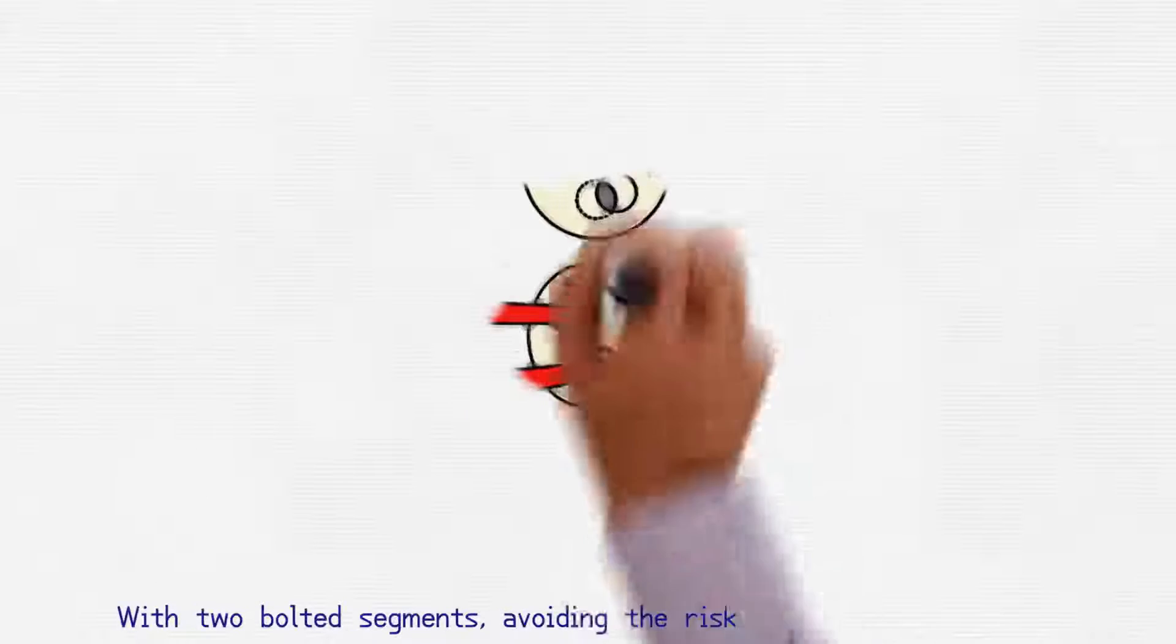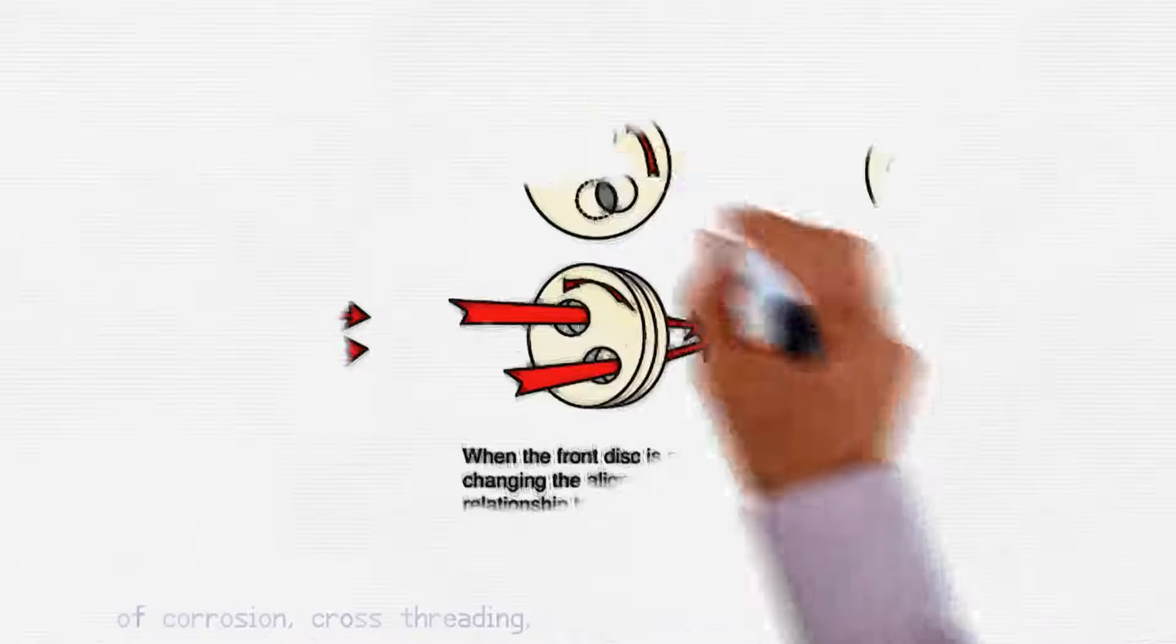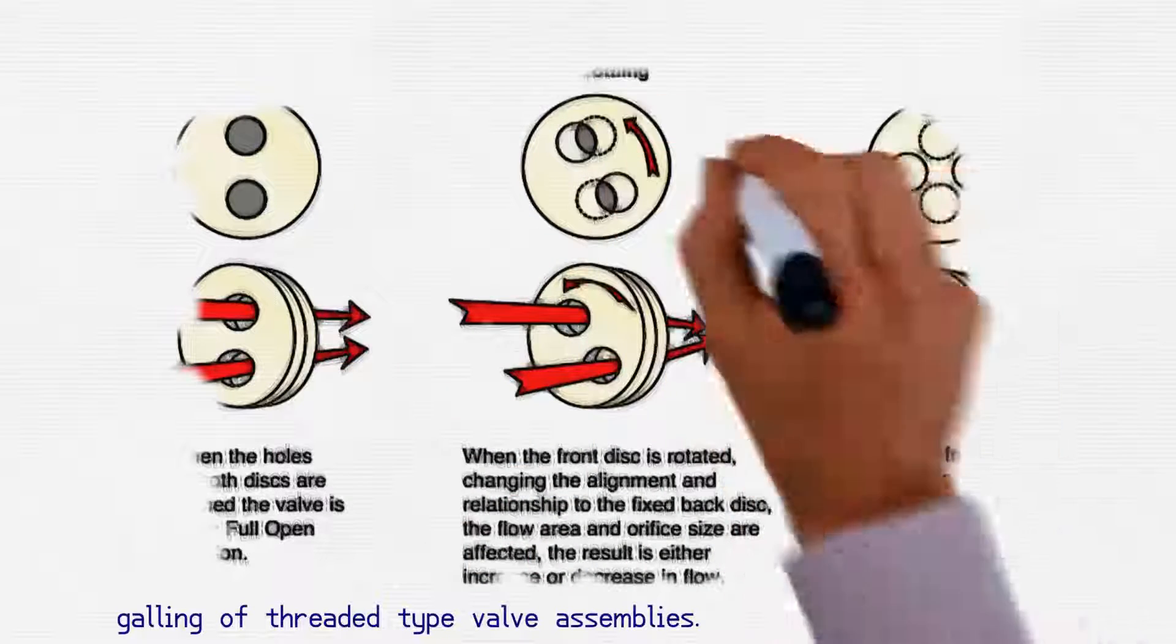Bolted Body. Body is constructed with two bolted segments, avoiding the risk of corrosion, cross-threading, and galling of threaded type valve assemblies.